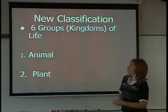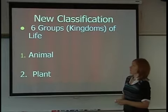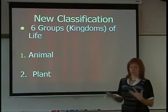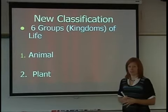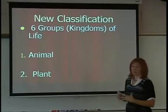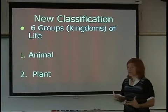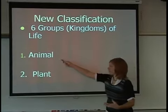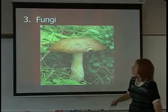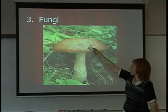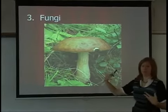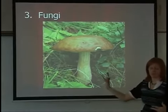Now we have the new classification system with six main groups, or kingdoms, that living things are grouped into. These include animals, plants, and fungi — which are mushrooms, morel, and other fungus.